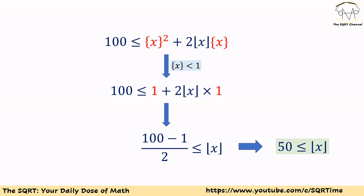Now we know the fractional part of x is less than 1, so instead of using fractional part of x we will use 1. We can write 100 is less than or equal to 1 plus 2 times floor of x. If we simplify, 99 is less than or equal to 2 times floor of x, and dividing both sides by 2 gives floor of x greater than or equal to 49.5.